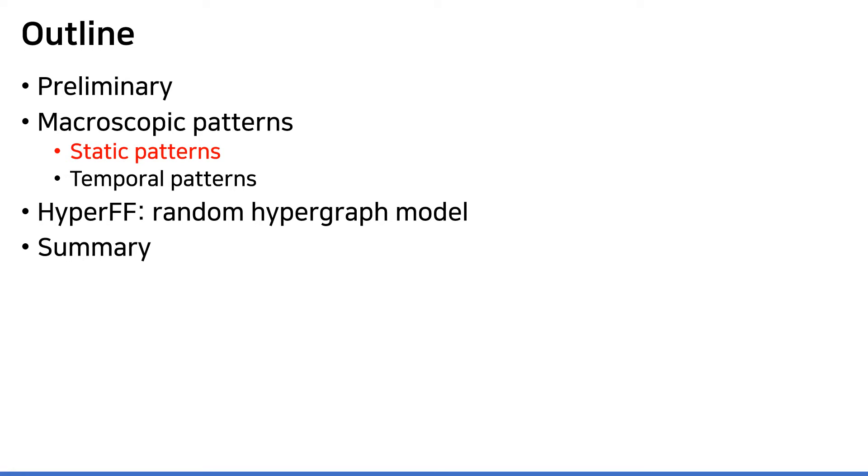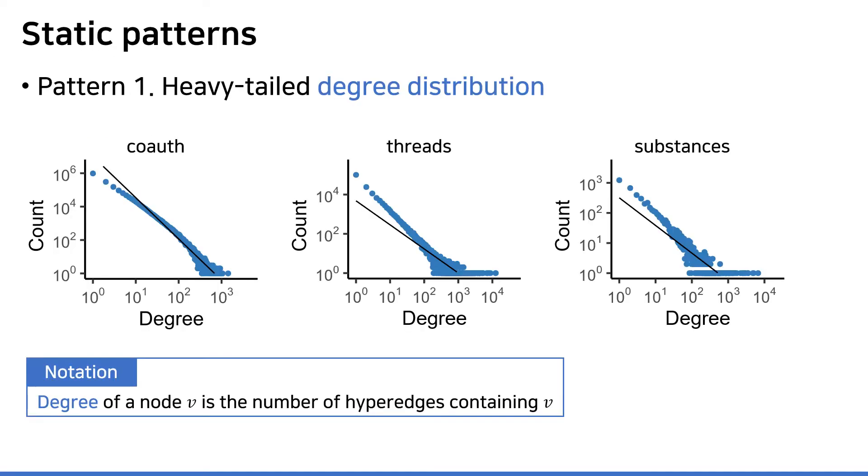Now that we are done with preliminaries, let's dive into the part for static patterns of real-world hypergraphs. The first static pattern we investigate is how the degrees of nodes are distributed. As mentioned, the degree of a node is defined as the number of hyperedges containing the node. As examined in the previous study, we also confirmed that it follows a heavy-tail distribution. Much more, the well-fitted static lines together with the log-likelihood ratio test suggests that the best candidate is the truncated power-law distribution, which falls under the class of heavy-tail distribution.